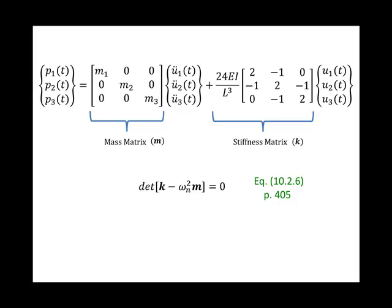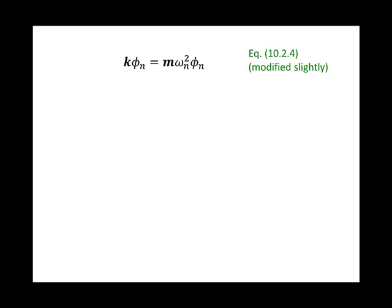To do this, let's back up to equation 10.2.4 in the textbook. I've slightly modified it by moving the ωₙ term to the other side of the mass matrix. Multiplying both sides by the inverse of m gives this. Now if we define m⁻¹k as matrix A, and the scalar ωₙ² as λₙ,